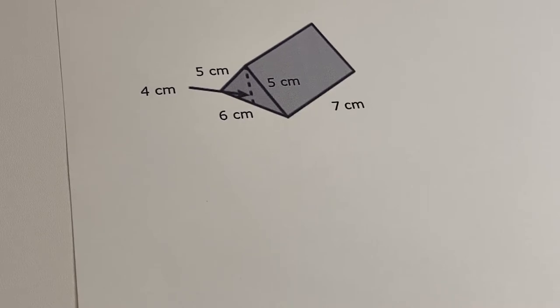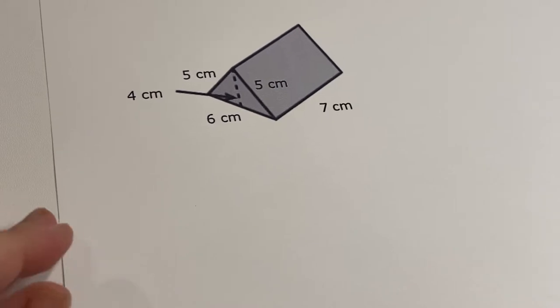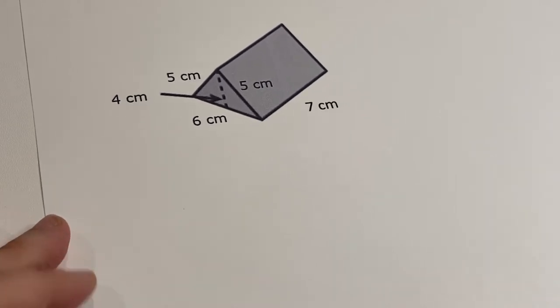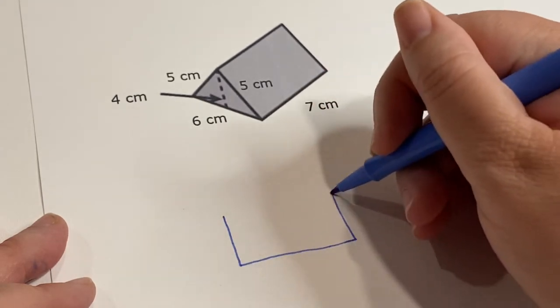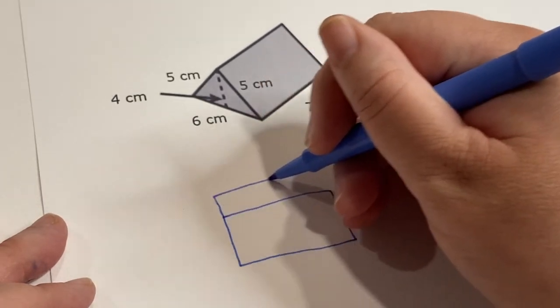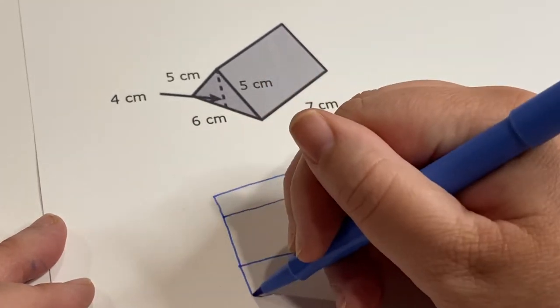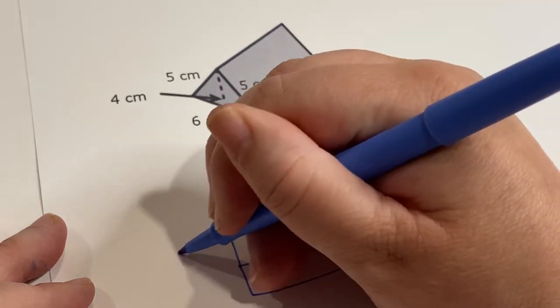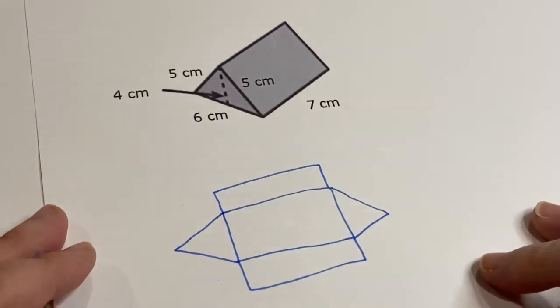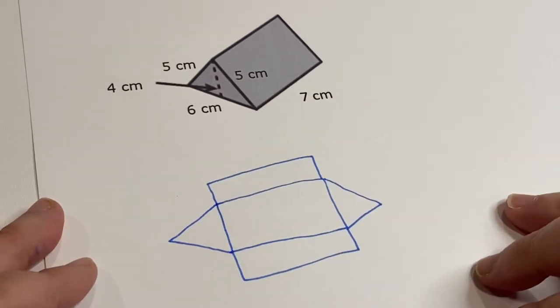So yesterday we found it using a net, and personally I like to use a net to help me find it. So I'm just going to draw for myself what this looks like more or less. And in this particular case, we have some shapes that have the same measurements, so those ones will have the same area.